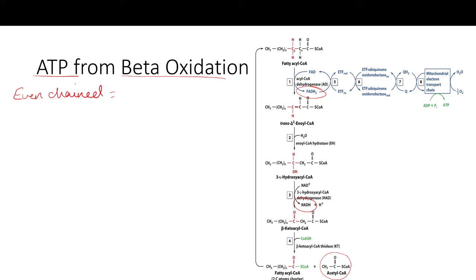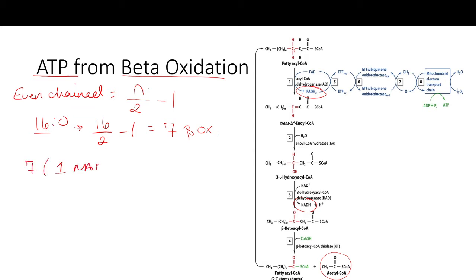For even-chained fats it's a straightforward formula: the number of rounds of beta oxidation equals N divided by 2 minus 1, where N is the number of carbons. For the 16:0 fatty acid with 16 carbons, that's 16 ÷ 2 − 1 = 7 rounds of beta oxidation. For every round we generate 1 NADH and 1 FADH2, so 7 rounds gives us 7 NADH plus 7 FADH2.